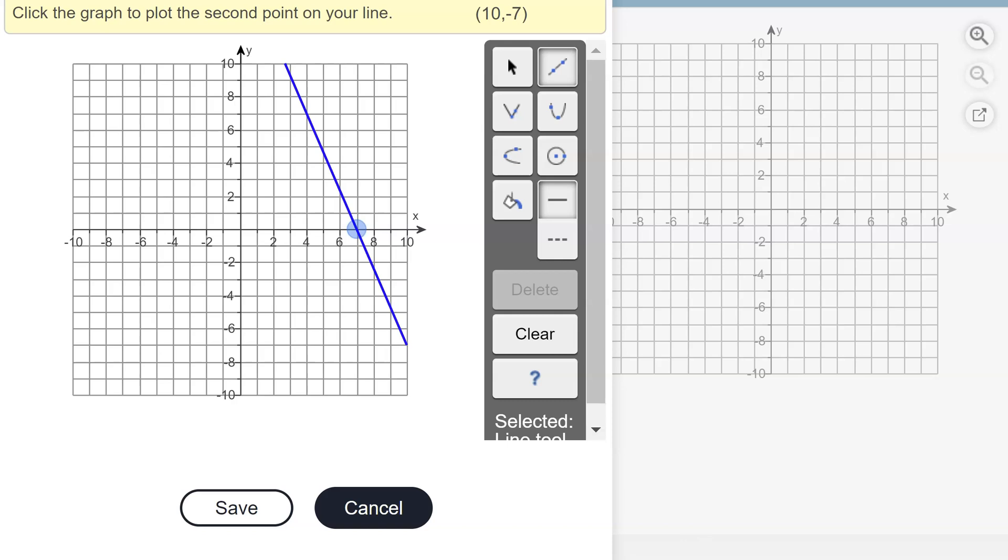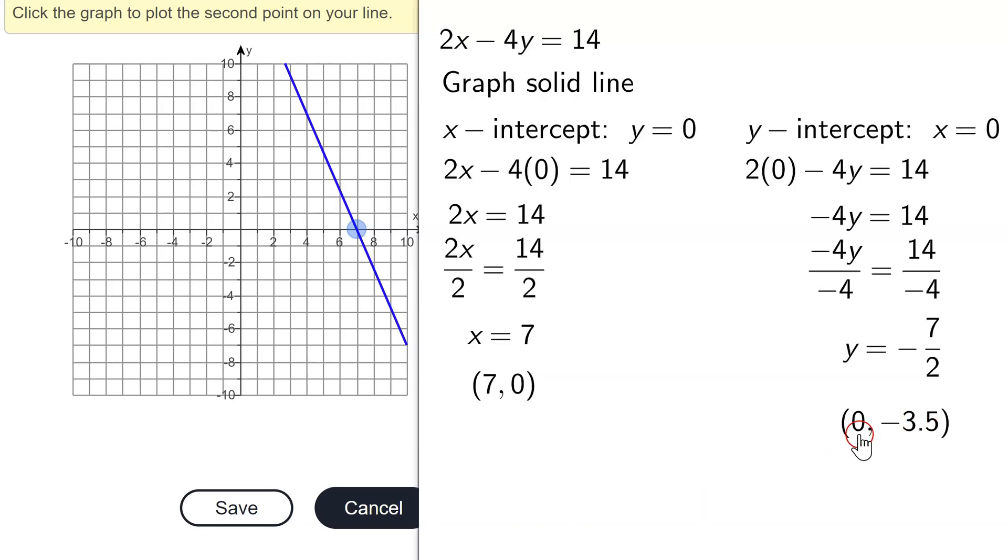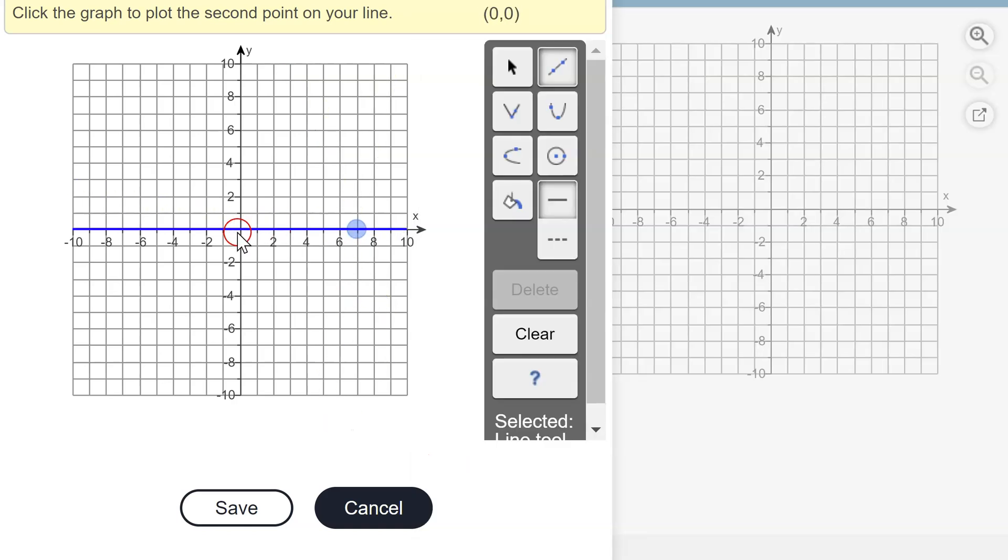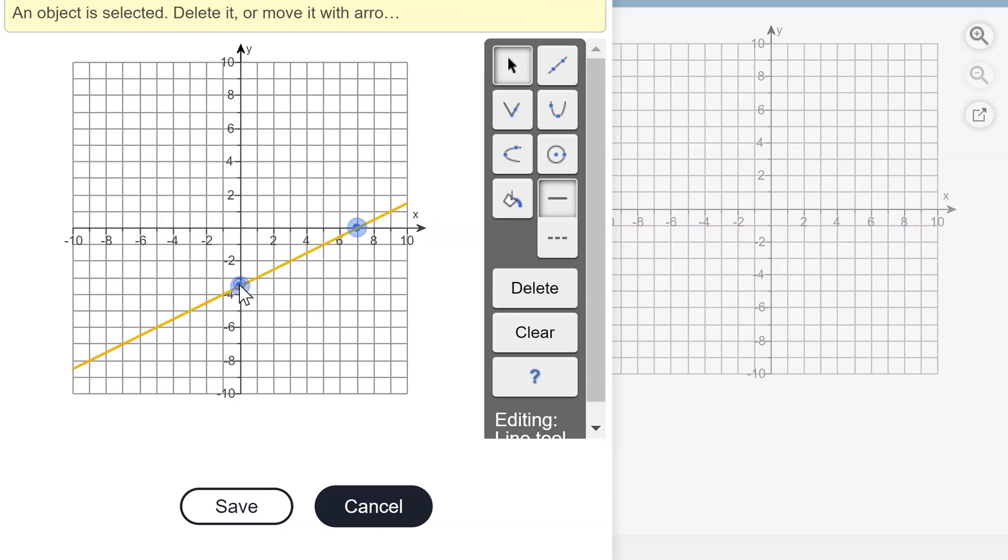And what was my y-intercept? 0, negative 3.5. So my y-intercept is 0, negative 3, and negative 3.5 is right there.